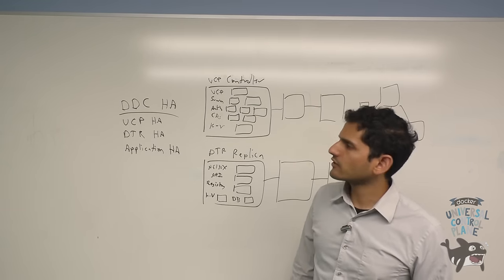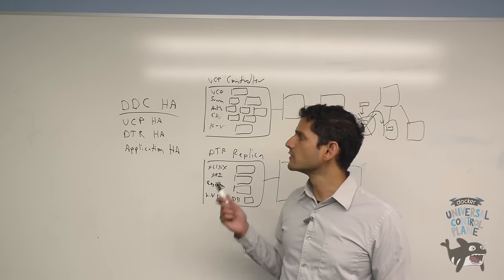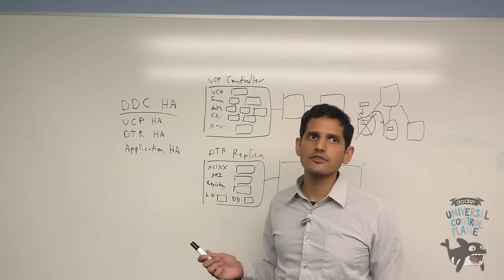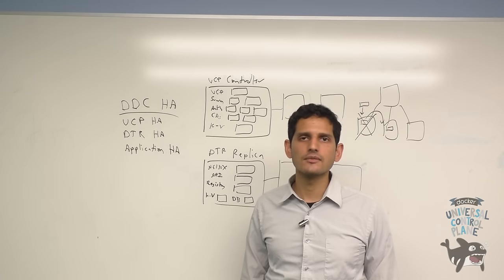So just to review, today we talked about how you can provide high availability in your Docker data center deployment for universal control plane, Docker trusted registry, and applications through Swarm container rescheduling. If you want to learn more, check out the links in the video or in the description.